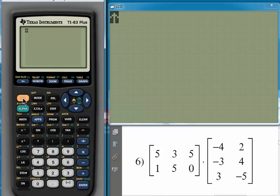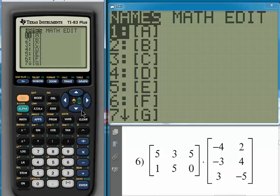Press the second key, and then press the key marked with X to the power of negative one. This will allow you to access the matrix menu.